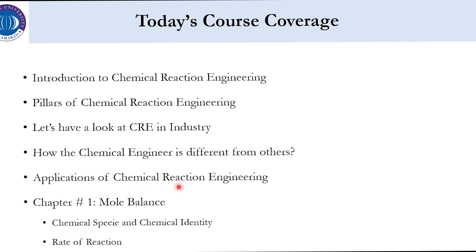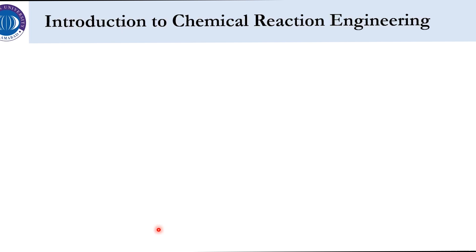We will follow the book by Ed Scott Fogler — Elements of Chemical Reaction Engineering, fifth edition — and move to chapter number one, which covers mole balance. Today we will cover two parts: chemical species and chemical identity, and the rate of reaction.